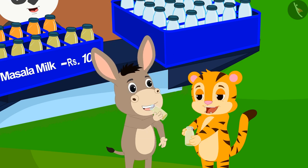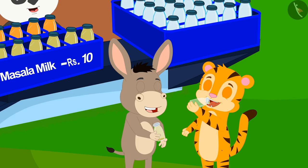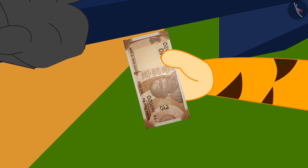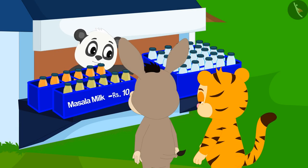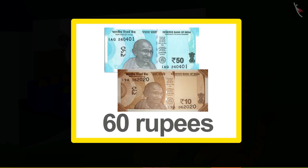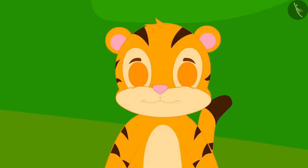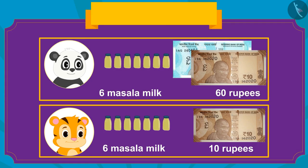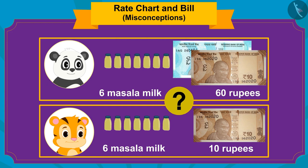Shere Khan and Bholla emptied their bottles of spiced milk with great fun. Shere Khan then gave 10 rupees to Golu for the spiced milk. But Golu told him that he had taken six bottles, so he would have to pay 60 rupees. Shere Khan was shocked to hear this. Children, can you tell who is correct between the two?